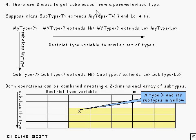There are two ways that you can get subclasses from a parameterized type. If you look at this example here, you'll see what I mean.